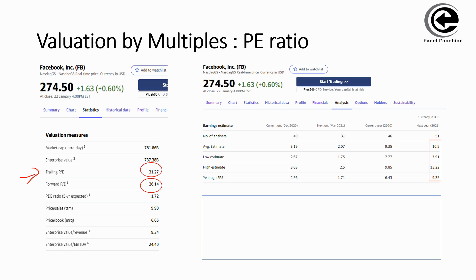Remember, PE ratio is basically share price divided by earnings. One is forward — looking into the future — and one is the trailing, looking backwards. In this example, we are looking at Facebook, and we are going to be using Facebook's financials to estimate the price of another company. Specifically, we'll use the financials from Facebook to estimate the price for Google.